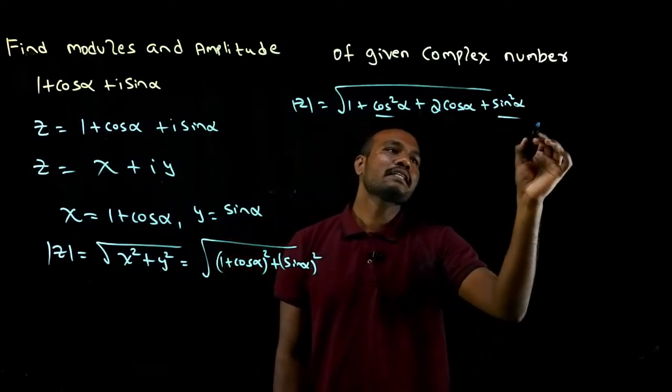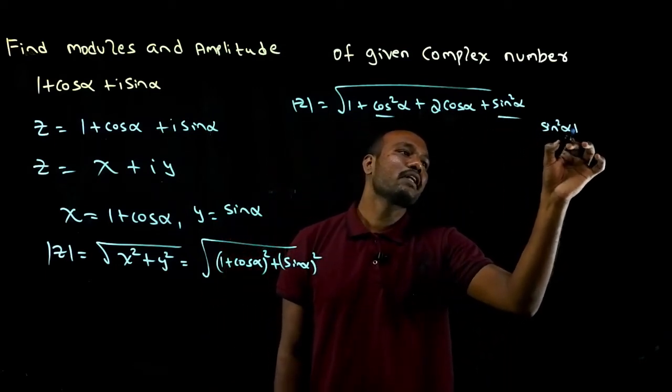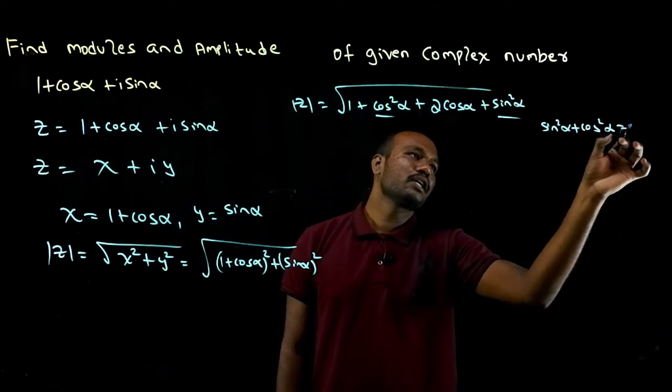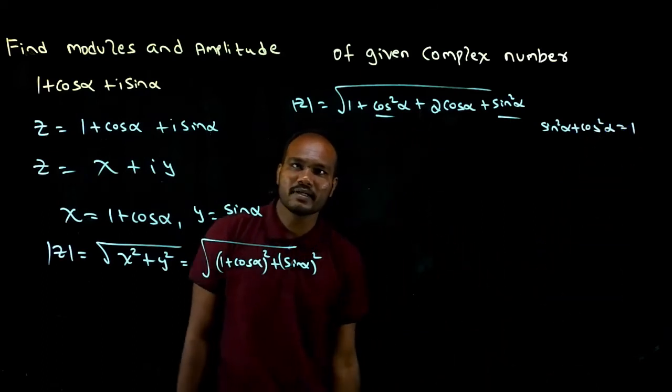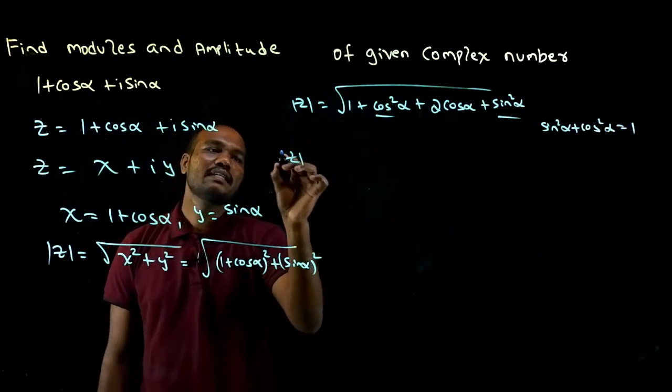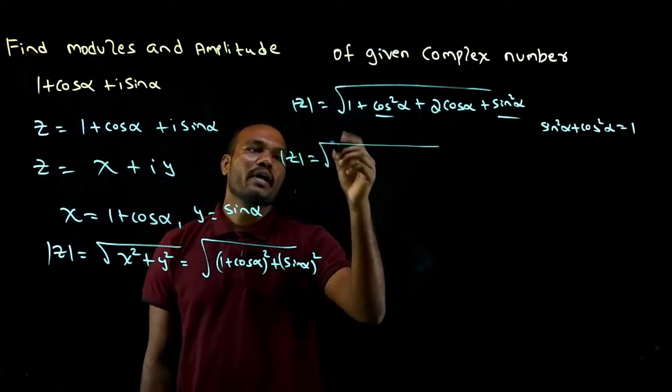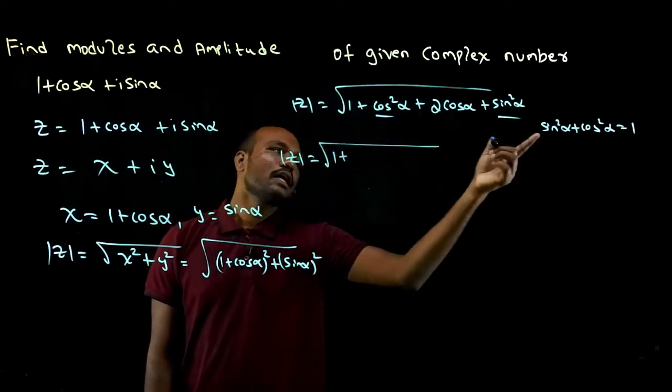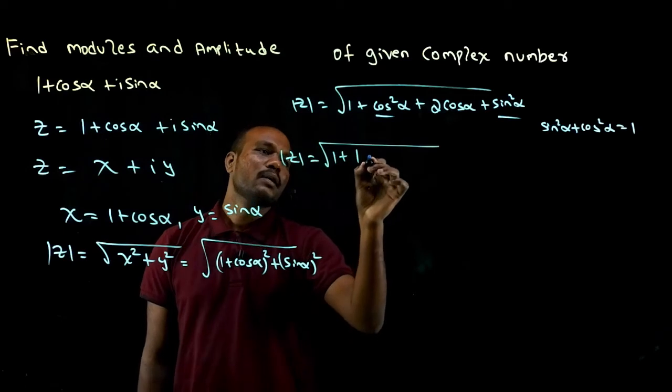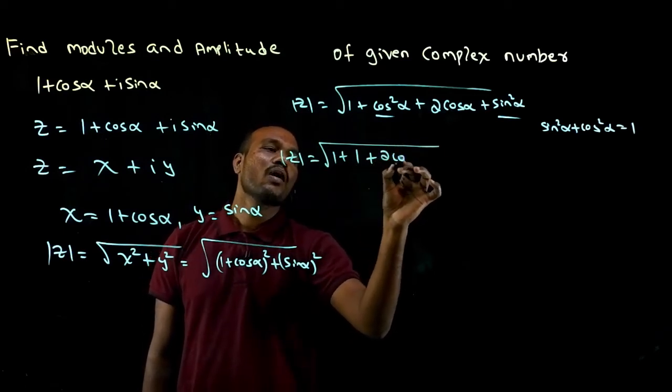Now sine square alpha plus cos square alpha is nothing but equal to 1. This is the trigonometric identity. So modulus of Z is equal to root of 1 plus 1, which is 2, plus 2 cos alpha.